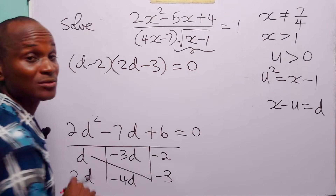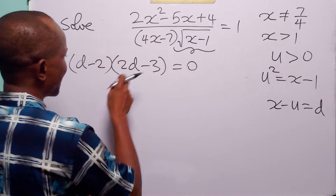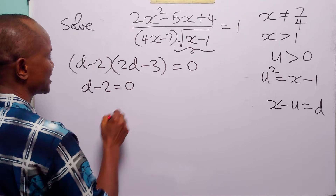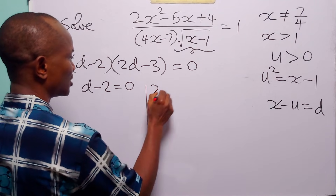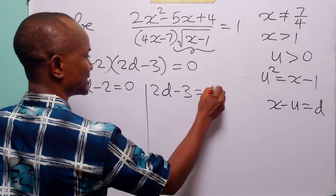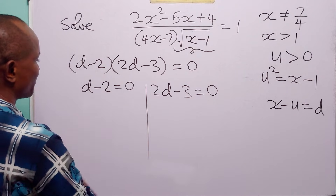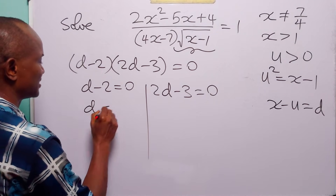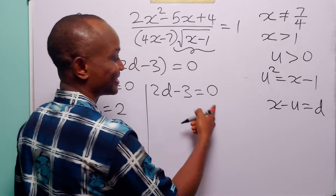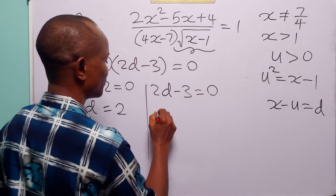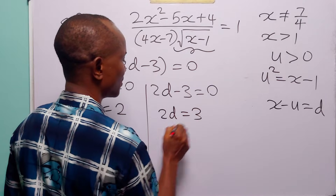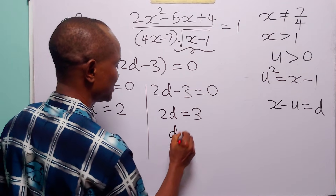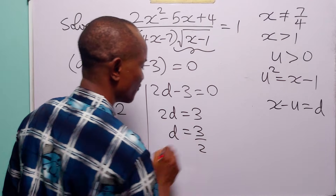This is equal to 0. From this equation, either d minus 2 equals 0, or 2d minus 3 equals 0. From the first, adding 2 to both sides gives d equals 2. From the second, adding 3 to both sides gives 2d equals 3, and dividing both sides by 2 gives d equals 3 over 2.